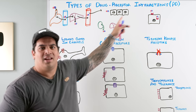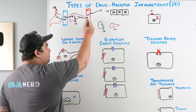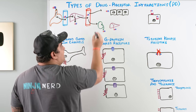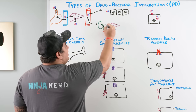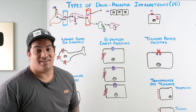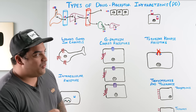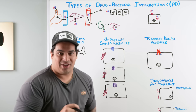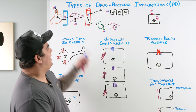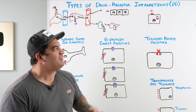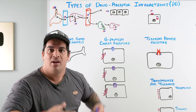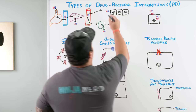After the drug performs its function, it can be taken to the kidneys or liver for excretion — the primary organs of clearance. Pharmacodynamics is what the drug does to the body, whereas pharmacokinetics is what the body does to the drug. We're now looking at what the drug does at the cellular level — to tissues and organs.